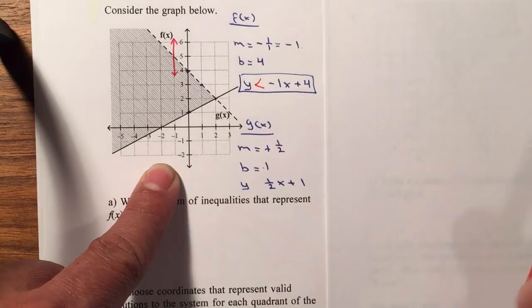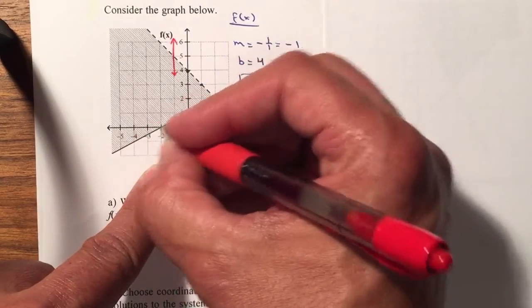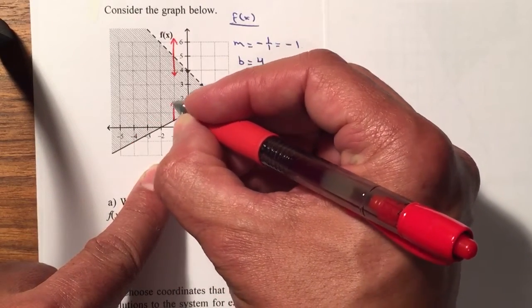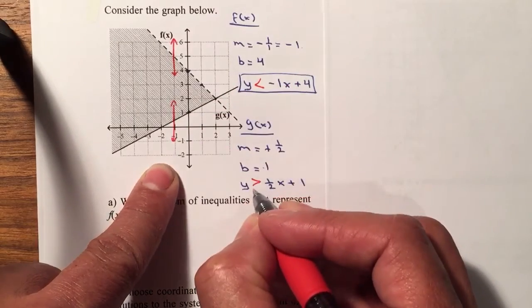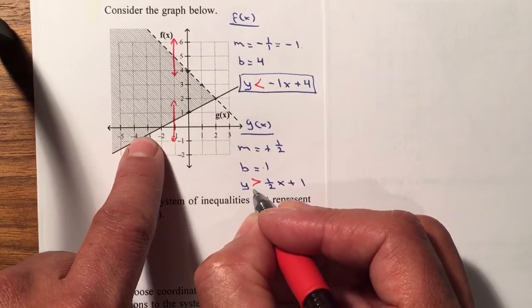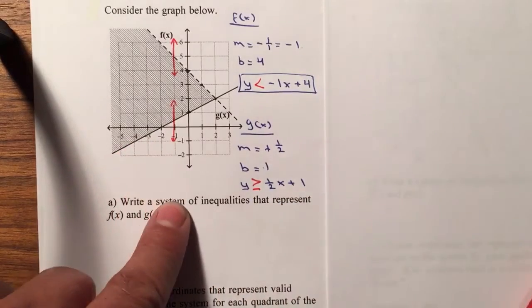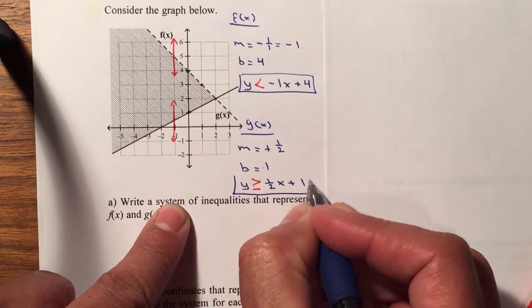And did they shade the low side or the top side? I'm going to place it anywhere, up and down. And notice that the shade is the top, so therefore it will be greater than. But because the line is solid, it can also be equal. And those are my two inequalities.